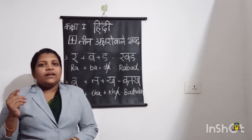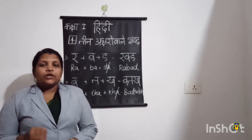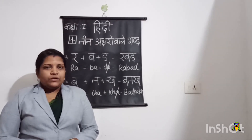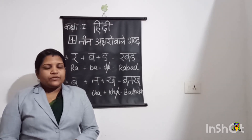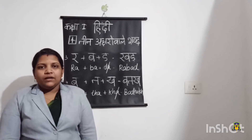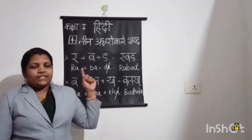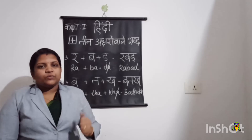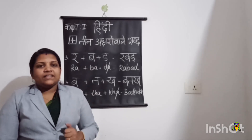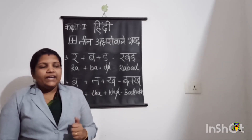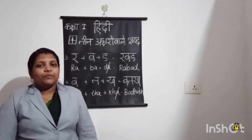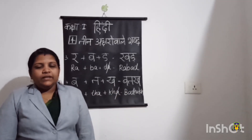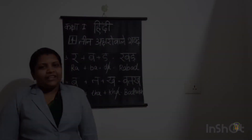So children, the rest of the two boxes you have to read by yourself — this is your homework. Today we learned a new lesson, Lesson 4: Three Letter Words. From this lesson, we learned how to write a three letter word and how to pronounce a three letter word. That's all for today. Thank you.